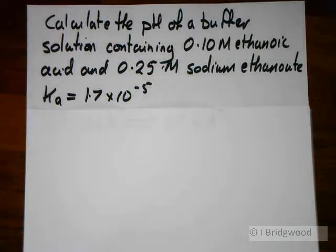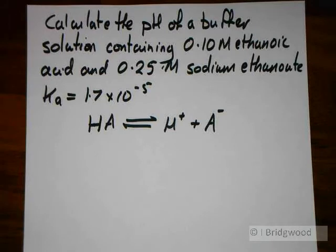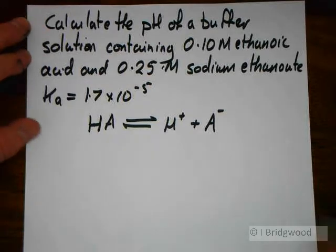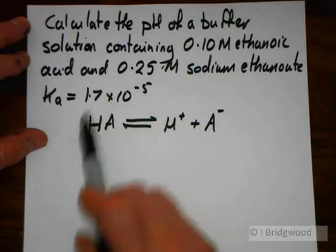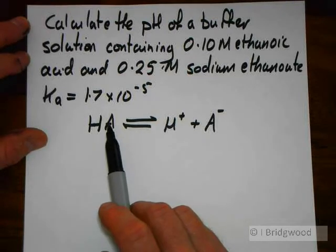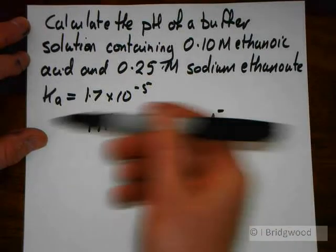Now we're still working with the basic weak acid equation HA in equilibrium with H plus plus A minus. Because it's a weak acid, the concentration of HA is going to be fairly large. It's only partially dissociated. The position of the equilibrium if it was a pure weak acid will be well over to the left.